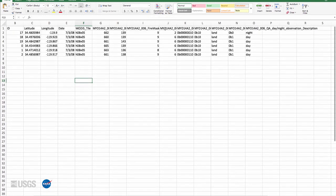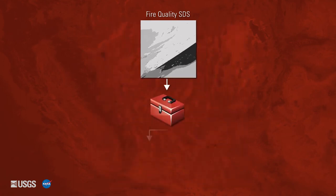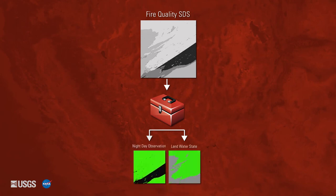Finally, the MODIS Python Toolbox provides users with a simple way to decode and interact with quality layers in ArcGIS. One of the tools in the toolbox is the Decode Quality Tool. This tool takes the Quality Science dataset as an input and creates individual GeoTIFF files corresponding to each bit word or quality category described in the Quality Science dataset.